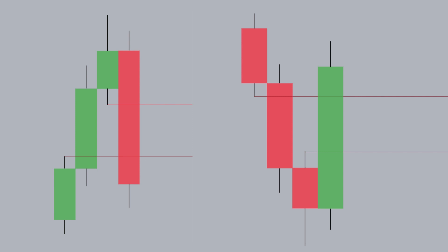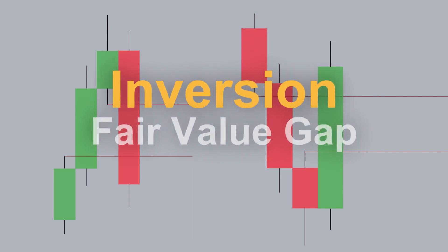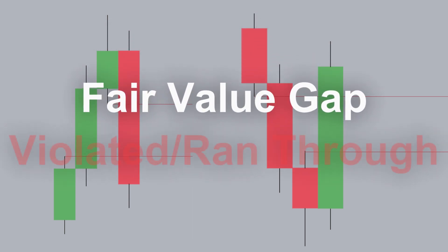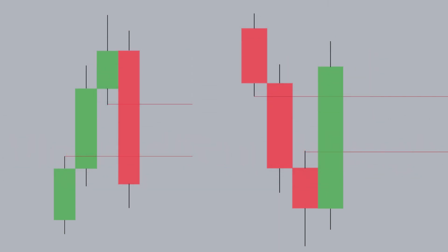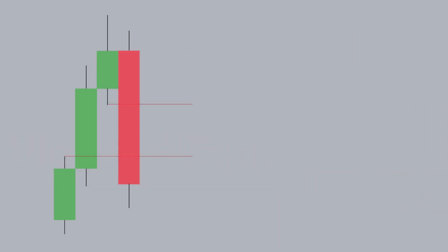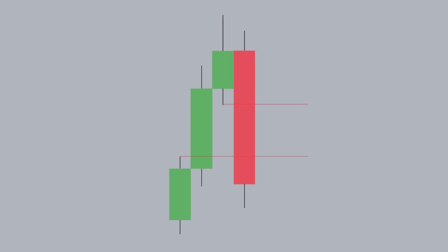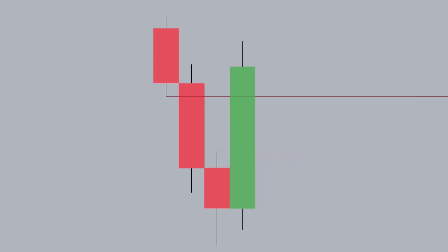Inversion fair value gaps are just a normal fair value gap that gets violated or ran through. What I mean by violated is: say we have a bullish fair value gap — as soon as a candle closes below that bullish fair value gap, that same fair value gap went from being bullish to being bearish. So it went from a bullish fair value gap to now being a bearish inversion fair value gap. The same applies with bearish fair value gaps: as soon as a candle closes above a bearish fair value gap, it has now become a bullish inversion fair value gap.